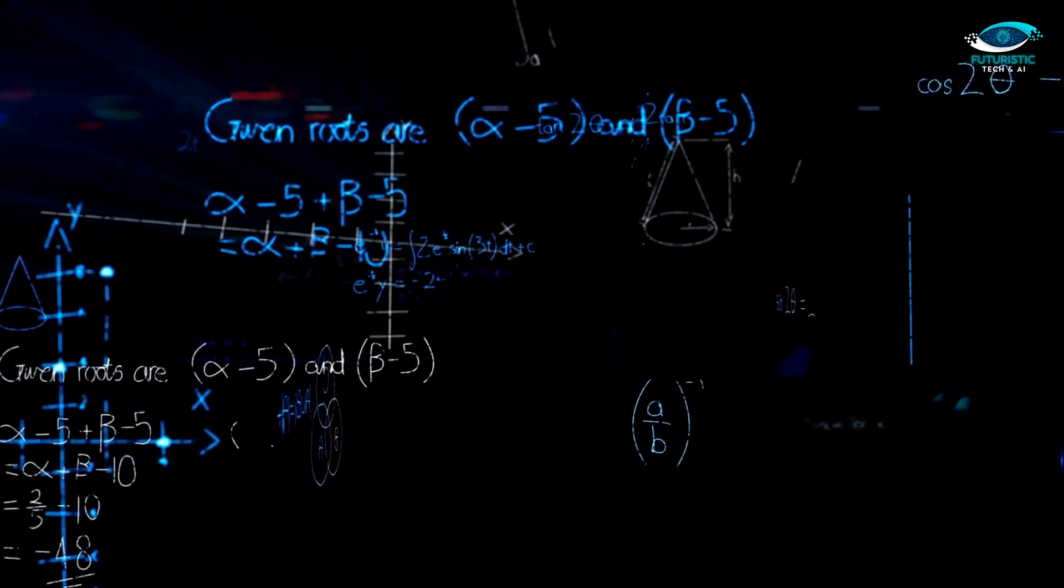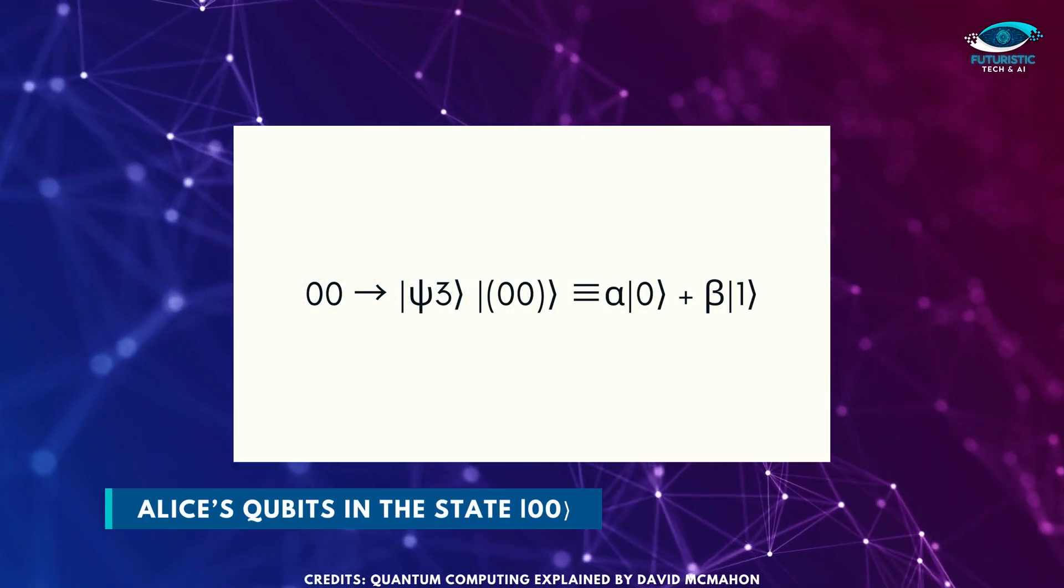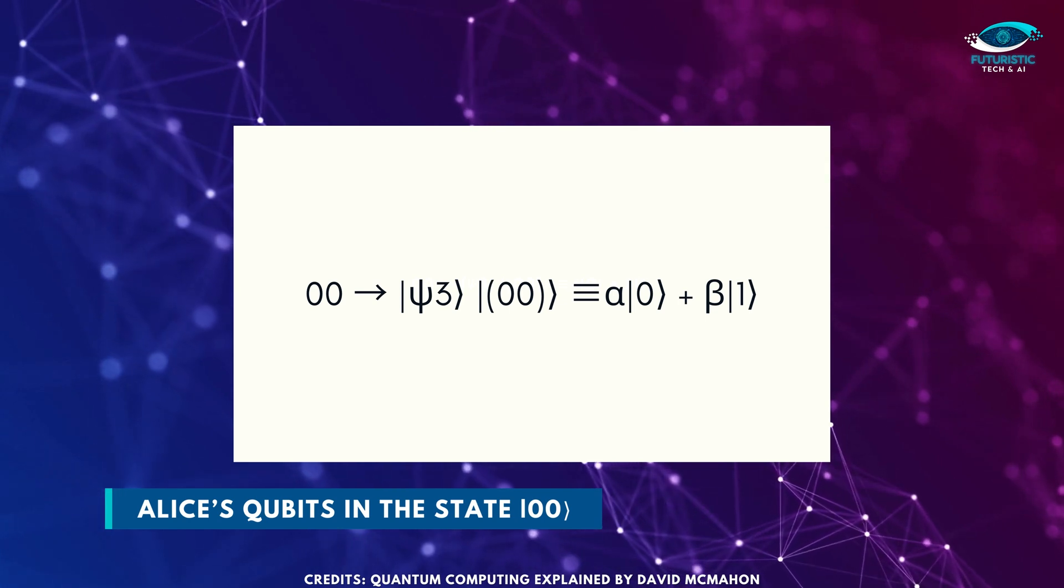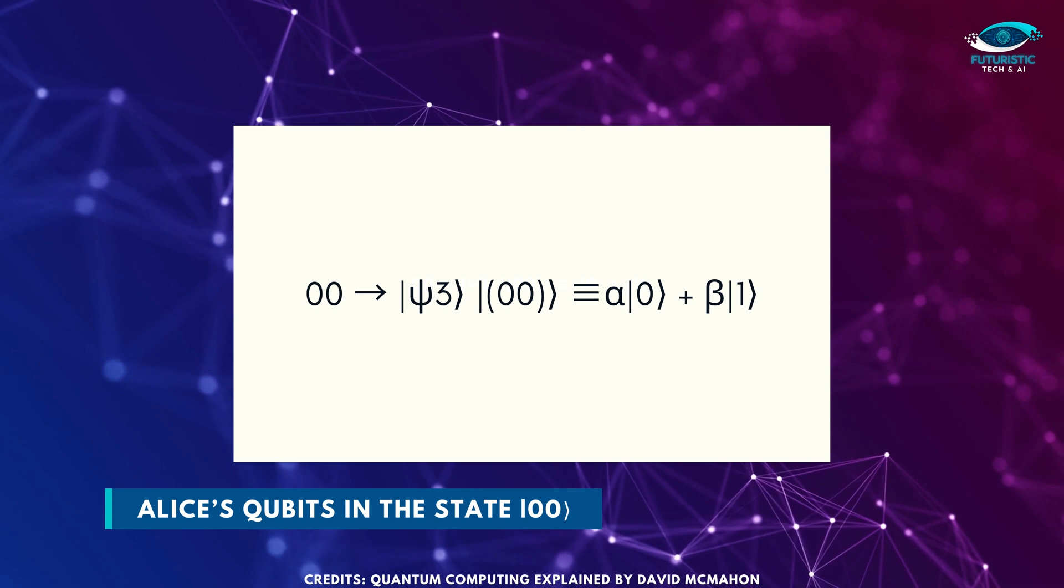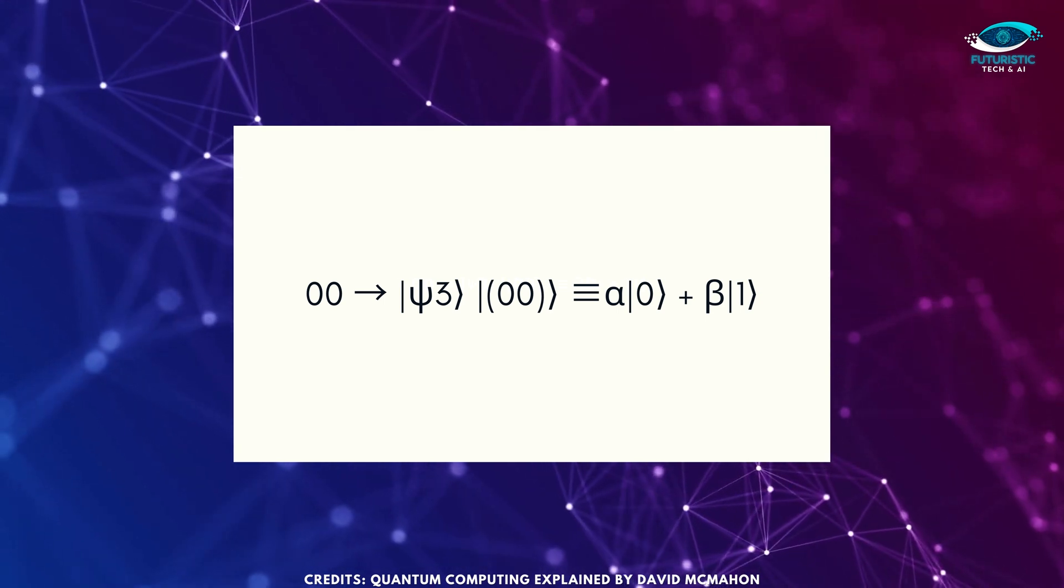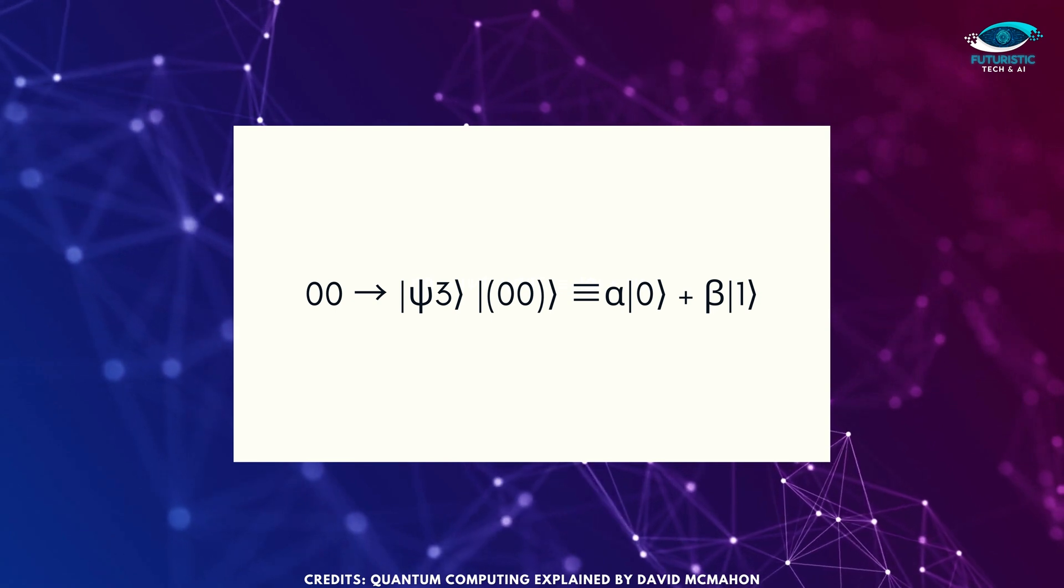This expression naturally breaks down into four terms. The first term is Alice qubits in the state zero, zero, and Bob's qubit in the state alpha zero plus beta one, which is then the original state psi. If Alice performs a measurement and obtains the result zero, zero, then Bob's system will be in the state psi.